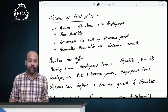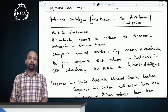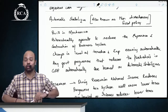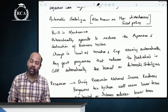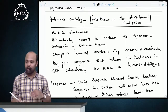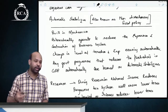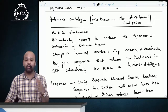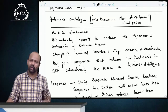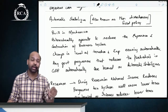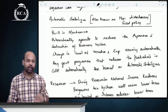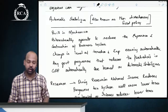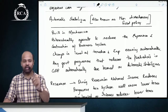Automatic stabilizers are also known as non-discretionary fiscal policy. When fiscal policy is devised with built-in mechanisms to automatically influence the level of economic activity, we call that an automatic stabilizer. Any government program that functions automatically — without direct government intervention — to regulate economic activity, reduce the impact of inflation or expansion, or reduce the impact of recession, would be an automatic stabilizer.